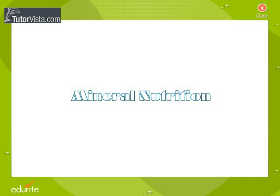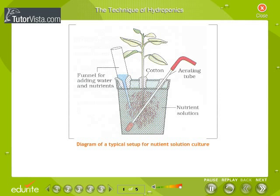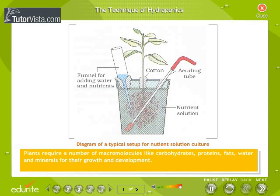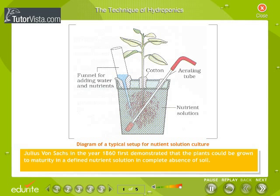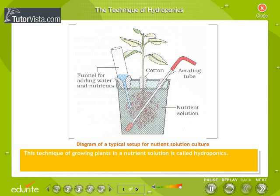Mineral Nutrition: The Technique of Hydroponics. Plants require a number of macromolecules like carbohydrates, proteins, fats, water and minerals for their growth and development. Julius von Sachs in the year 1860 first demonstrated that plants could be grown to maturity in a defined nutrient solution in complete absence of soil. This technique of growing plants in a nutrient solution is called hydroponics.